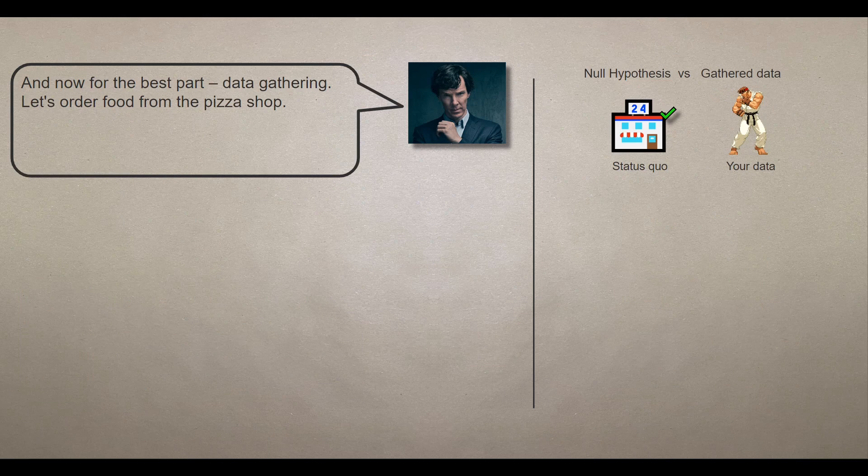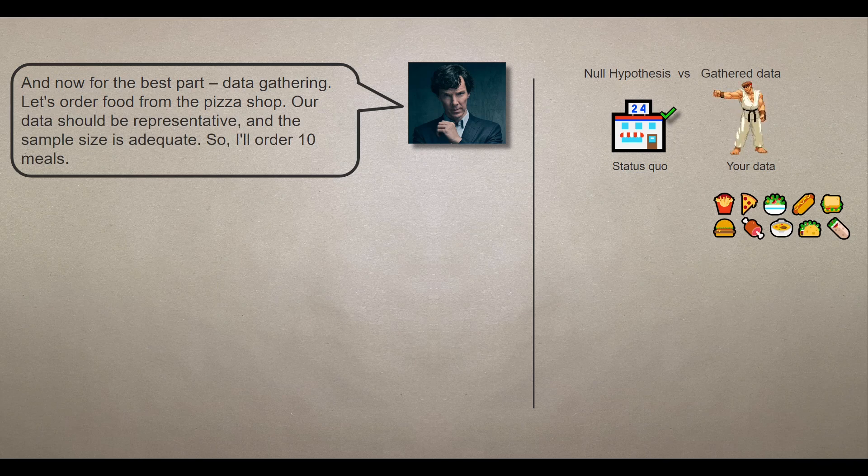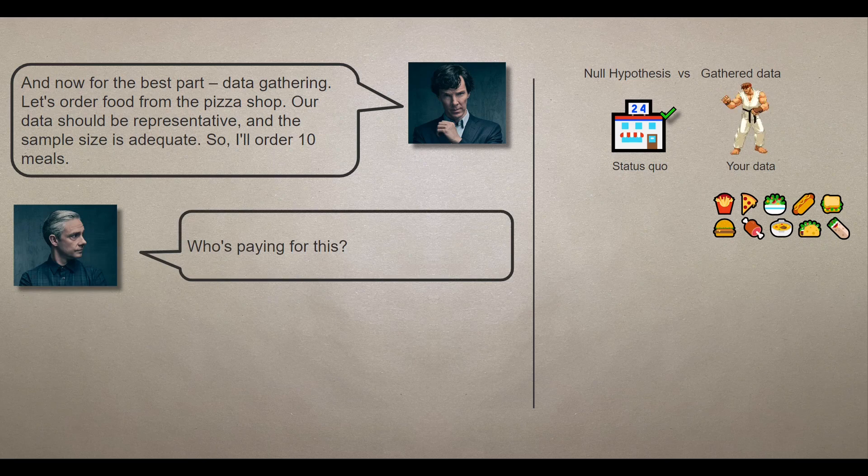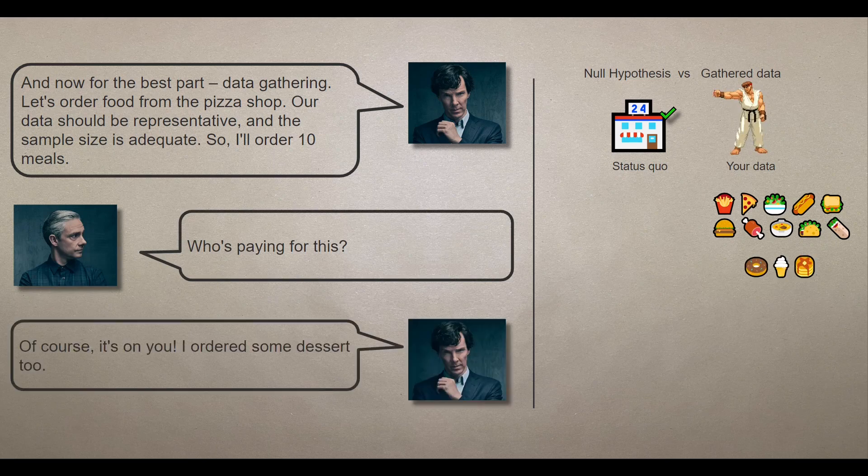And now for the best part, data gathering. Let's order food from the pizza shop. Our data should be representative and the sample size is adequate. So I will order 10 meals. I'm sorry, who's paying for this? Of course it's on you. I ordered some dessert too.